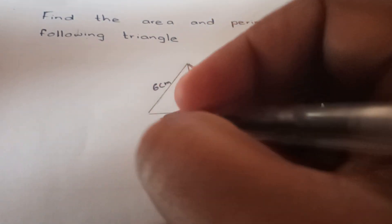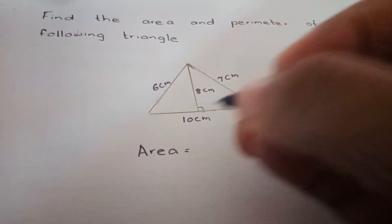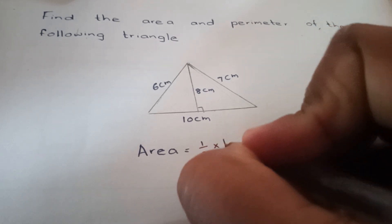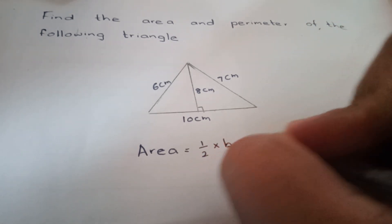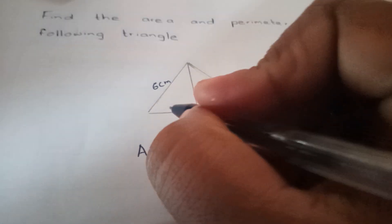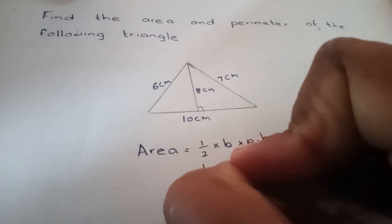To find the area: area equals half times base times perpendicular height. Half times base - the base is 10 centimeters.